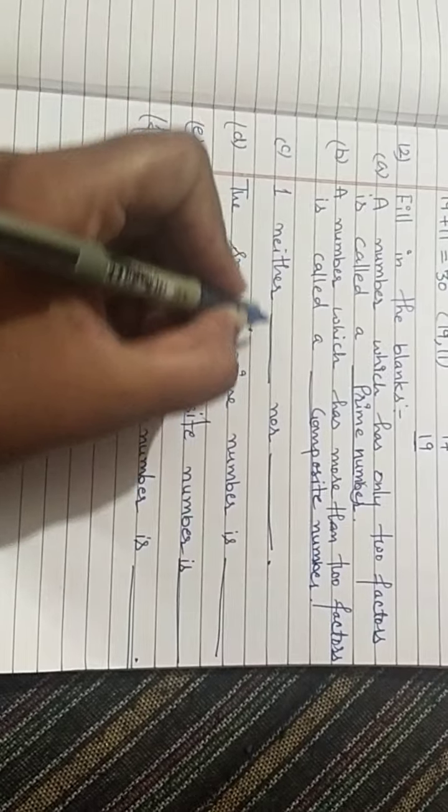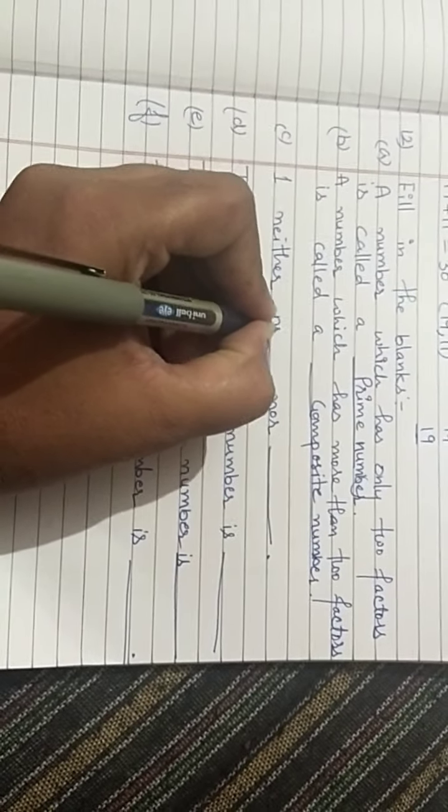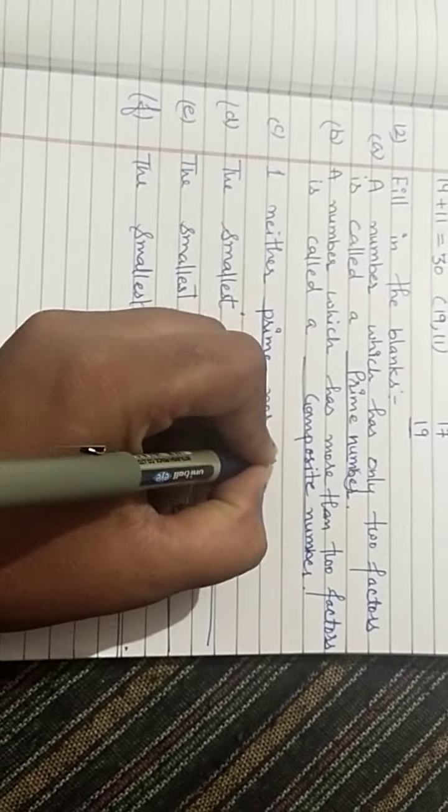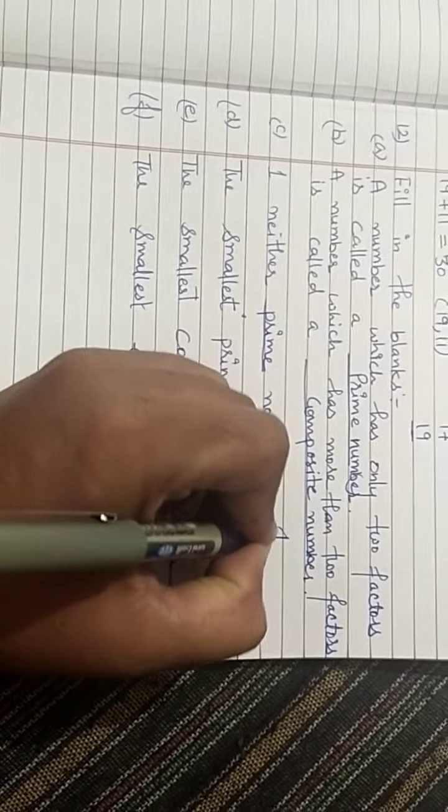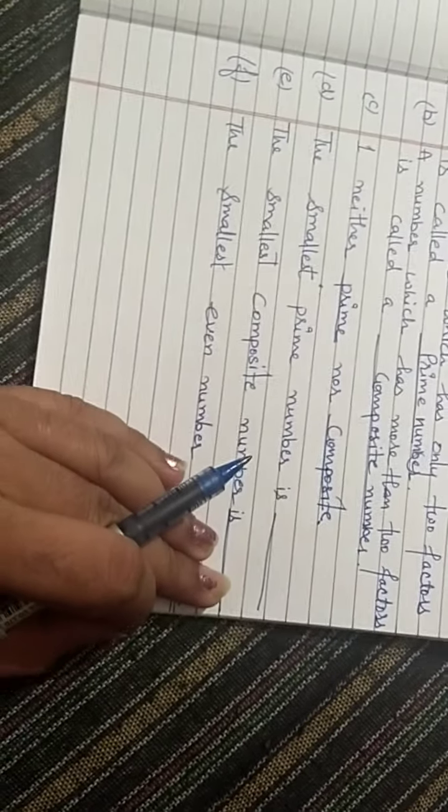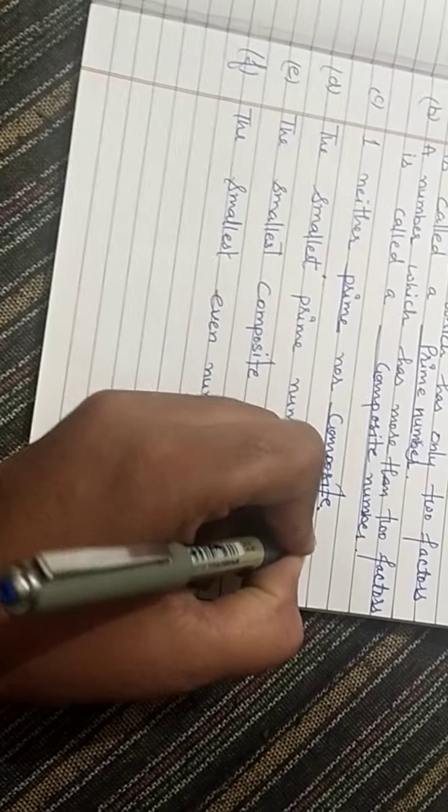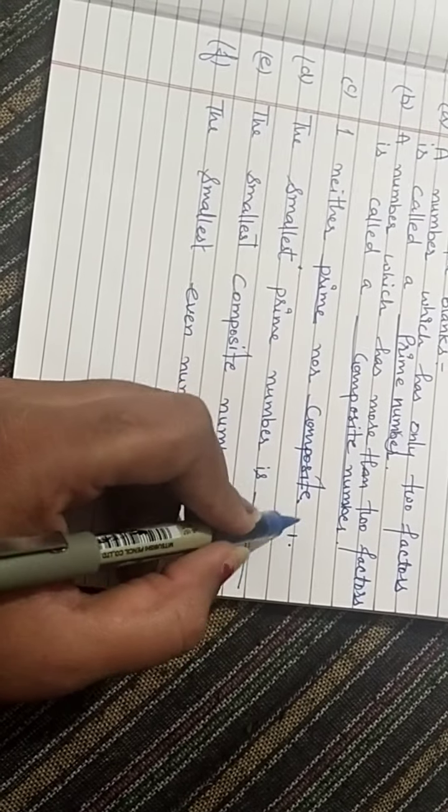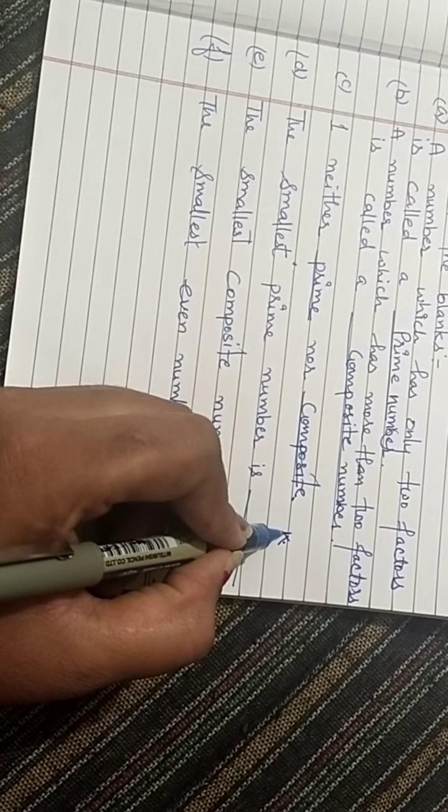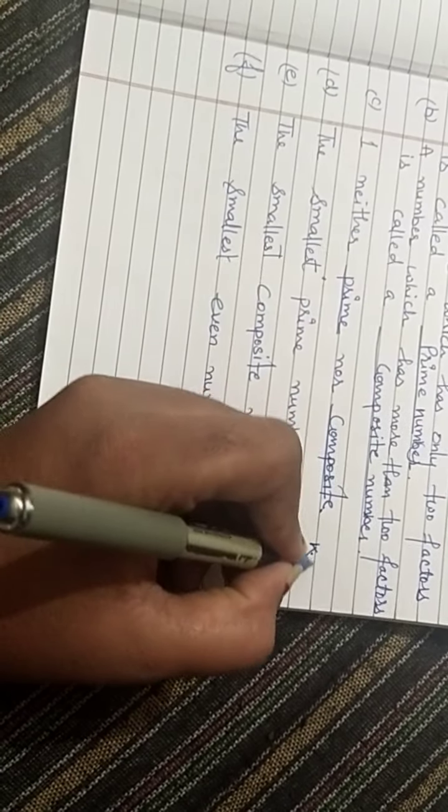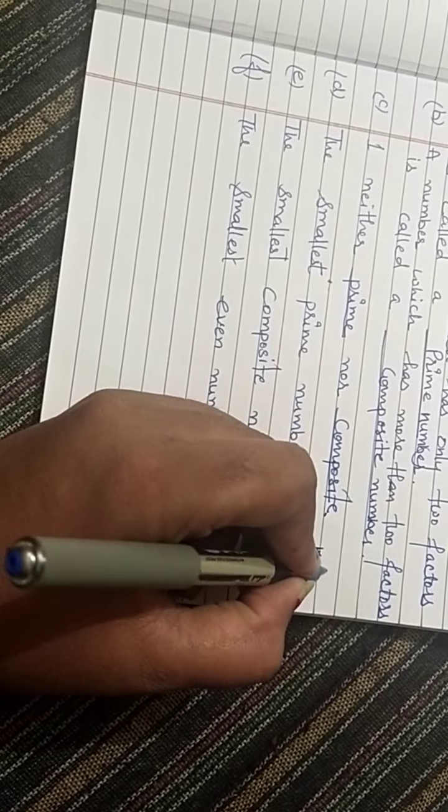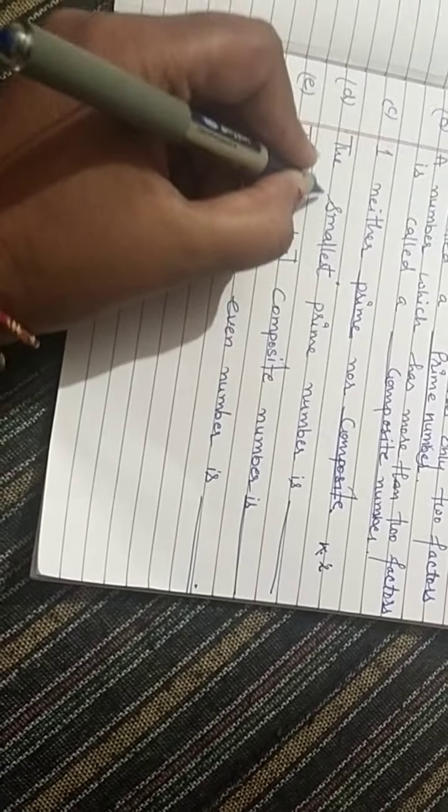1 is neither prime nor composite. The smallest prime number - 1 might seem prime, but 1 is neither prime nor composite. 2 is also prime but that is even. The smallest prime number starts with 2.